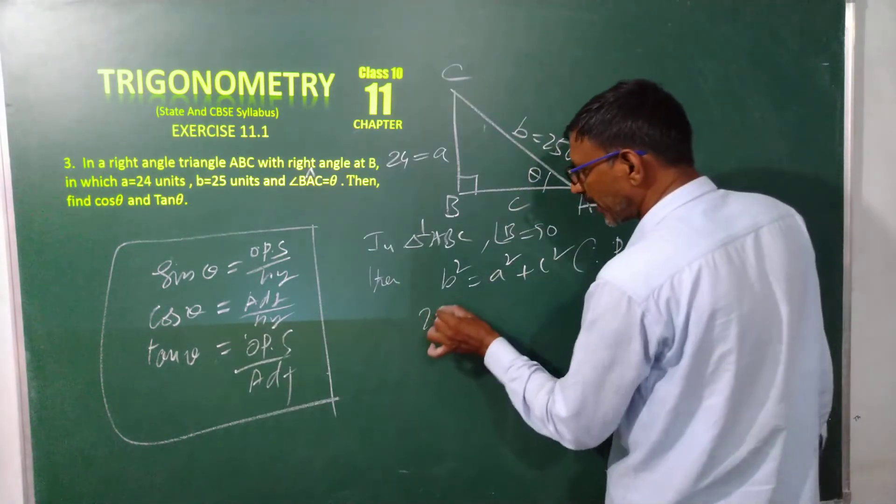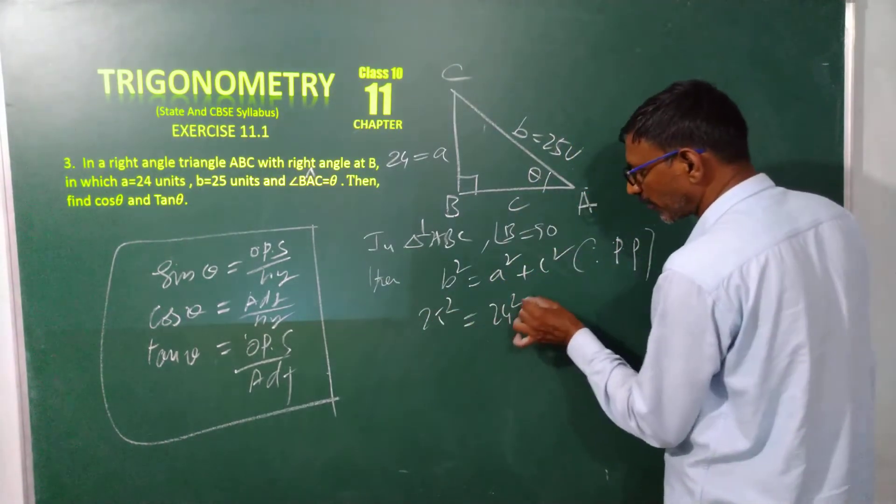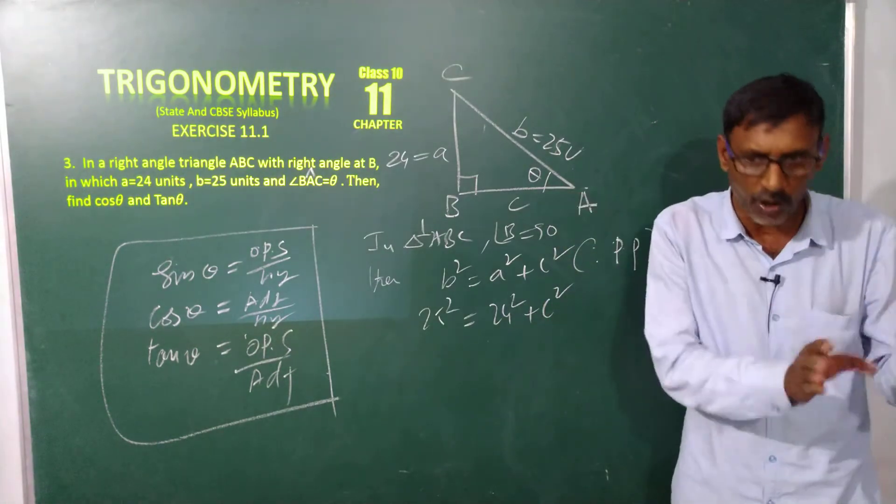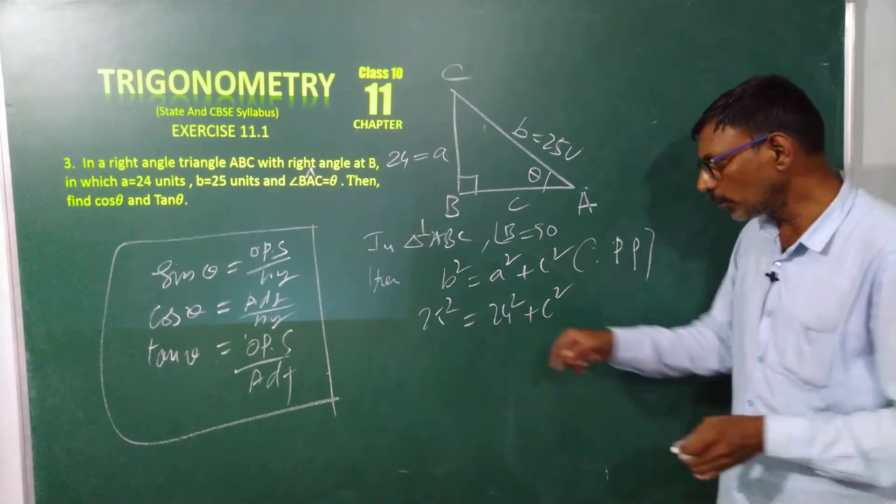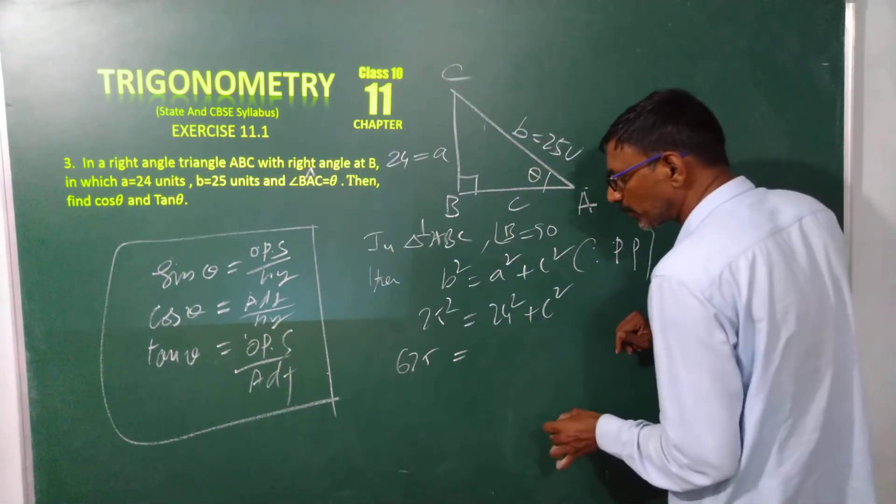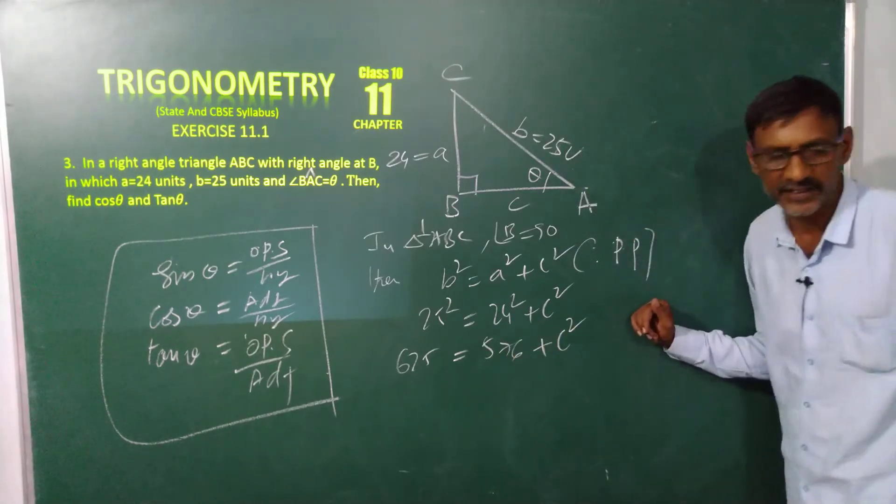b square, 25 square is equal to a square, 24 square, and c square. We don't know that. 25 times 25 is 625 is equal to 24 times 24 is 576 and you can write c square as it is.